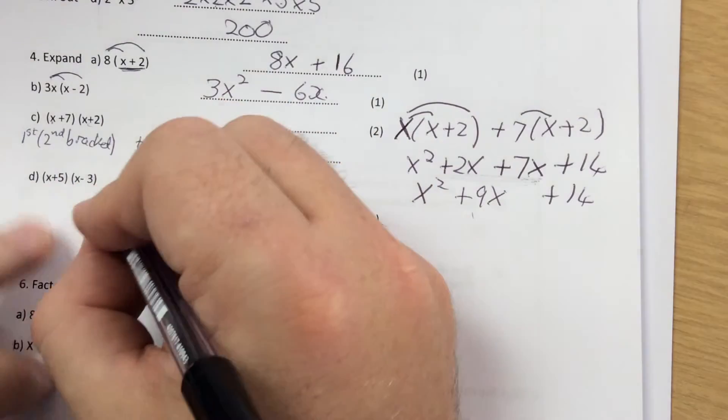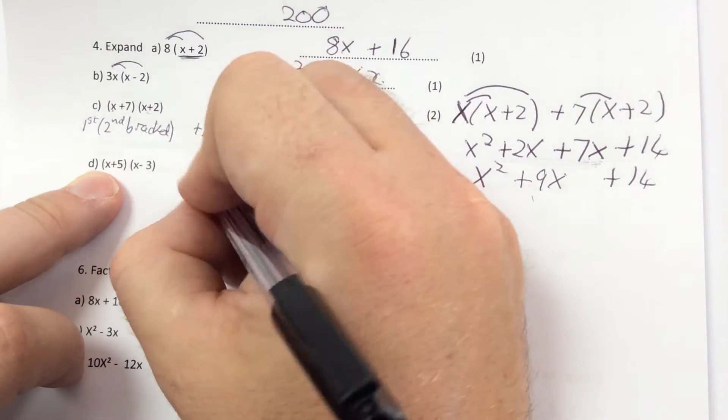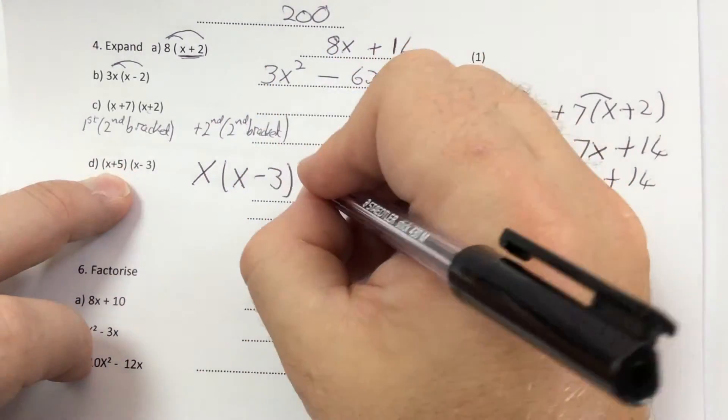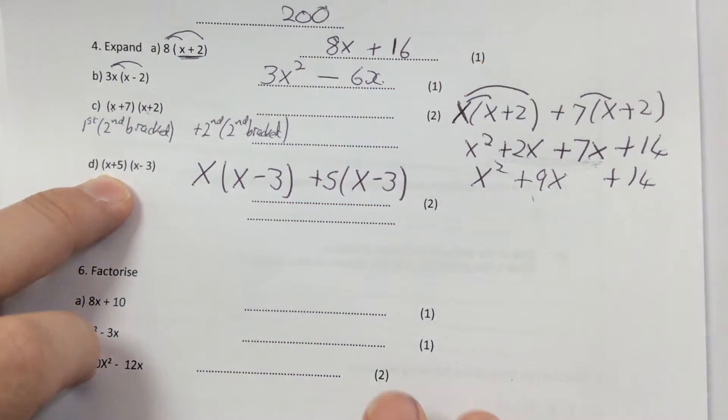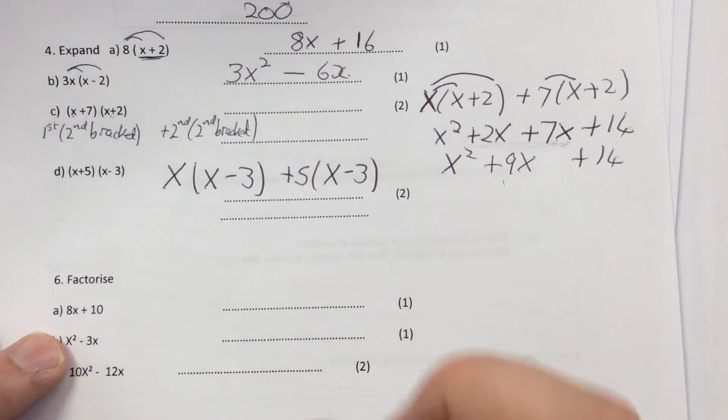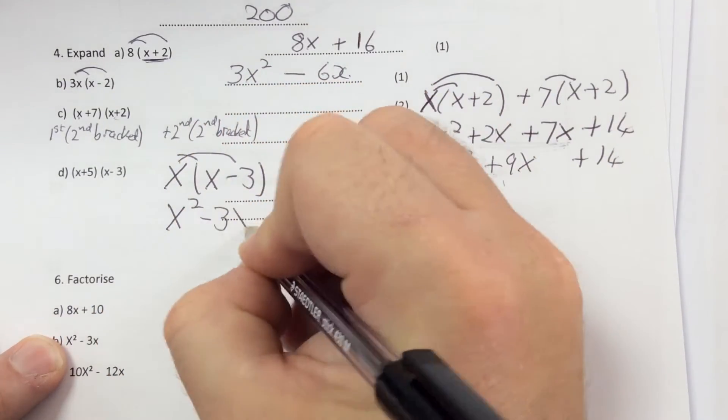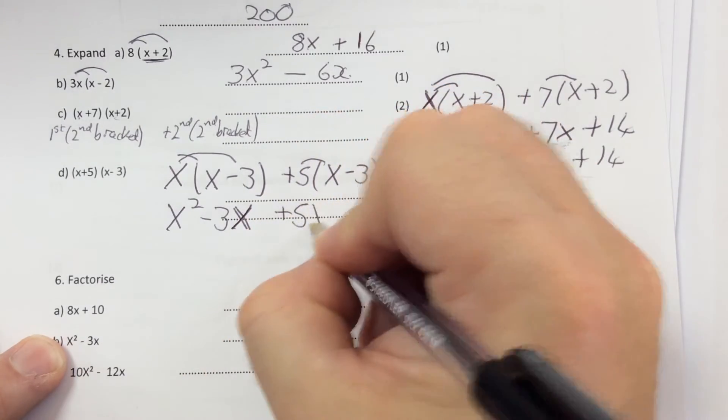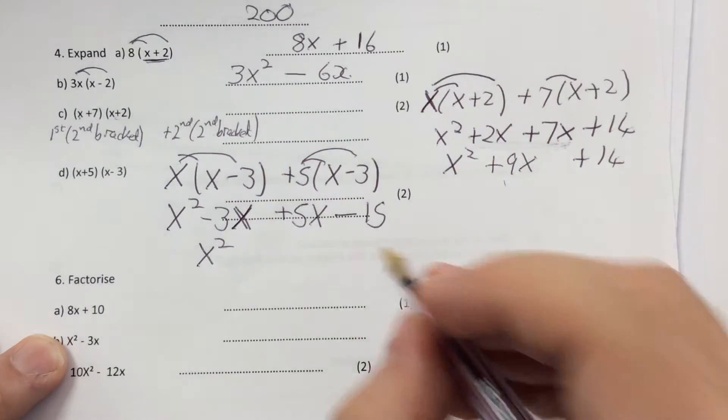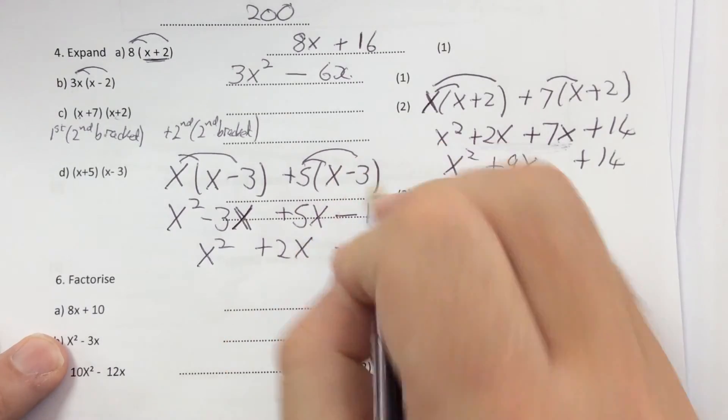If I do the same for d, I'm splitting d up. So d is x plus 5. So I'm splitting it up into x times the second bracket, and then plus 5 times the second bracket. And now I can multiply that out. So when I'm multiplying that one out, x times x is x squared. x times minus 3 is minus 3x. 5 times x is 5x. 5 times minus 3 is a minus 15. And then I've got x squared. I've got minus 15 on the end. And minus 3x add 5x is 2x.